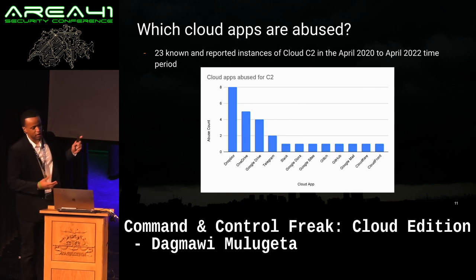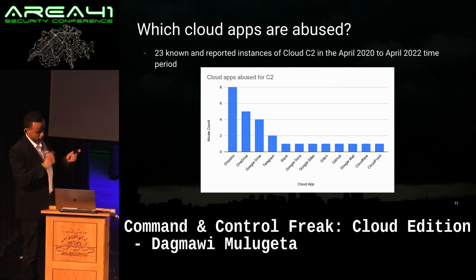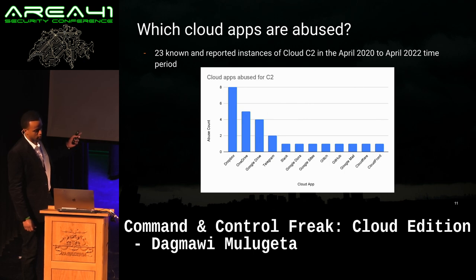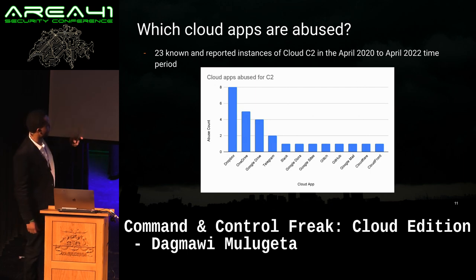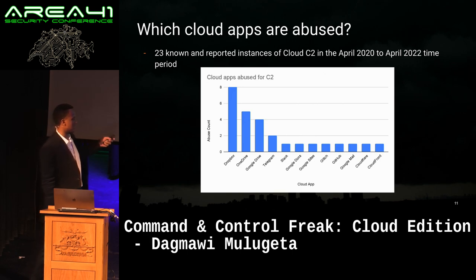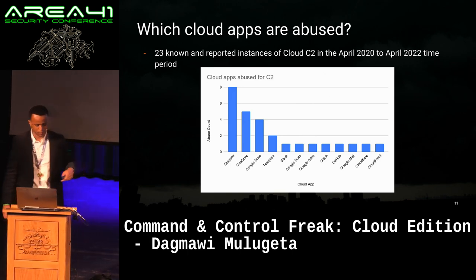We looked at the cloud apps abused over this two-year period and see a general trend: Dropbox is the most preferred app at eight instances, followed by OneDrive at five, and then Google Drive at four. After that, Telegram at two, and then Slack, Google Docs, Google Sites, Glitch, GitHub, Gmail, Cloudflare, and CloudFront all at one instance.